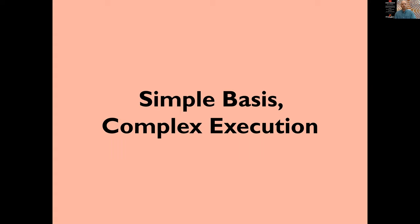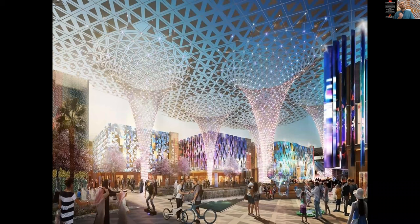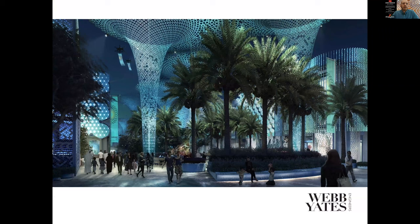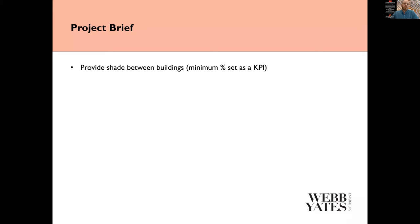Our brief for this project was really these renders — the initial renders from Hopkins that laid down their concept idea. It's relatively simple: Dubai is a very hot place, and you need shading to actually go outside during much of the day. They proposed to line the main streets of the districts with shading structures of different patterns and forms. As an engineer looking at these slides, it was slightly terrifying, because there's not a lot of structure holding them up and they're kind of floating. Our project brief was to provide shade between the buildings — this was actually a KPI — with the client saying there needs to be a certain amount of shade to make it usable as street space.